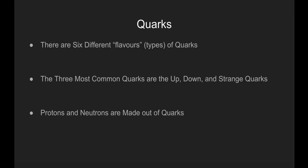What you may not have learned is that both protons and neutrons are made out of even smaller particles called quarks. There are six different types, or as physicists say, flavors of quarks. We will be dealing here with only the three most common ones, which are the up quark, the down quark, and the strange quark.